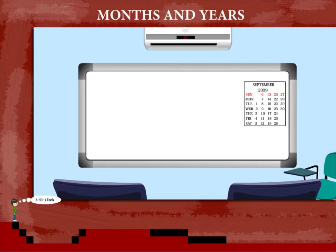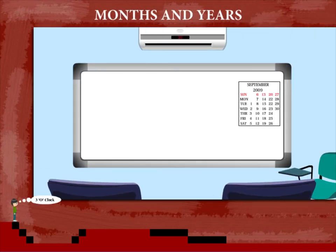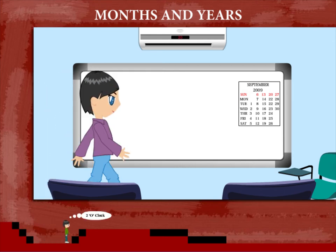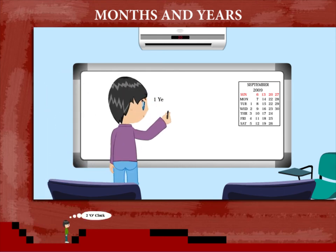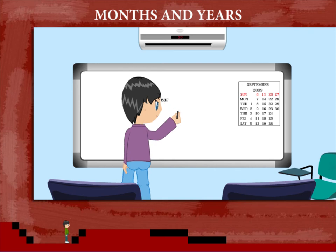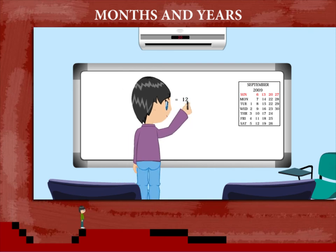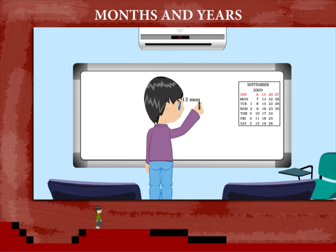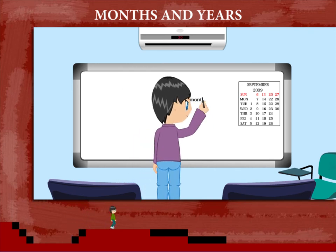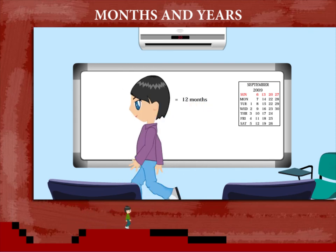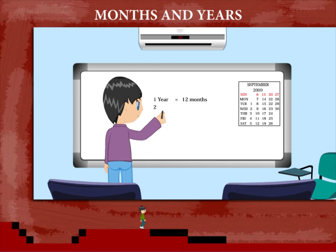Months and Years. Jamie is in the class to tell us about calendar facts. Everyone knows 1 year is equal to 12 months.